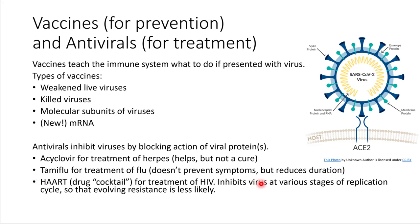We mentioned HIV earlier — this is the virus that causes AIDS. To treat this infection there is a treatment called HAART, which stands for Highly Active Antiretroviral Therapy. It's a drug cocktail — a mixture of several different antivirals. The reason for this is that HIV is a virus that mutates very quickly. If we tried to treat it with just one antiviral, chances are the virus would develop a resistance to that antiviral and be able to evade the drug. But if we provide a mixture of several different antiviral types, that can help to interrupt the virus at various stages of replication, making resistance less likely to develop. People infected with HIV have to be very consistent with taking their HAART therapy in order for it to be effective; otherwise, resistance is likely to develop.